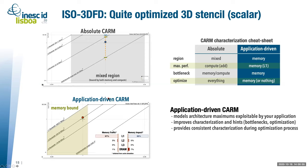When we look at the application-driven CARM, by scaling the roofs according to application demands, we can see our point is deep in the memory-bound region, positioned on top of the L2 line. This suggests that for this application there is very little we can do to further boost performance, because it's a stencil that exploits locality in L1 for most accesses, but there are always one or two accesses that go to DRAM.